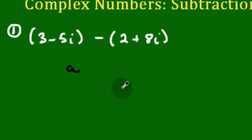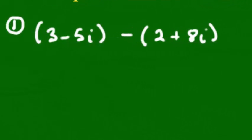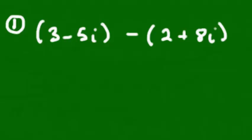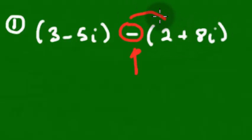Since our problem is already written in that form, it makes it kind of easy to work with. Just like we dealt with polynomials, we're going to change this subtraction problem to addition. The way we do that is we're going to think of this symbol as an opposite sign. It just means we're going to take the opposite of the second polynomial — the opposite of 2 and the opposite of 8i.